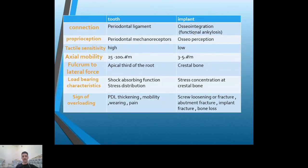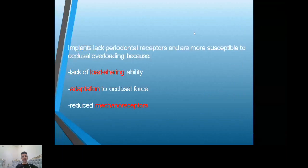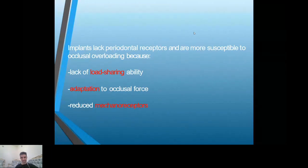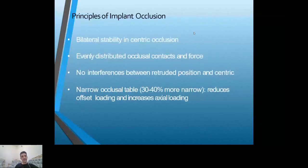The implant can suffer screw loosening, fracture of the abutment, fracture of the prosthesis, or sometimes bone loss. Implants lack periodontal receptors and are more susceptible to occlusal overloading because of the lack of shock-absorbing ability and adaptation of occlusal forces that mechanoreceptors provide. This makes implants more susceptible to overloading forces than teeth.